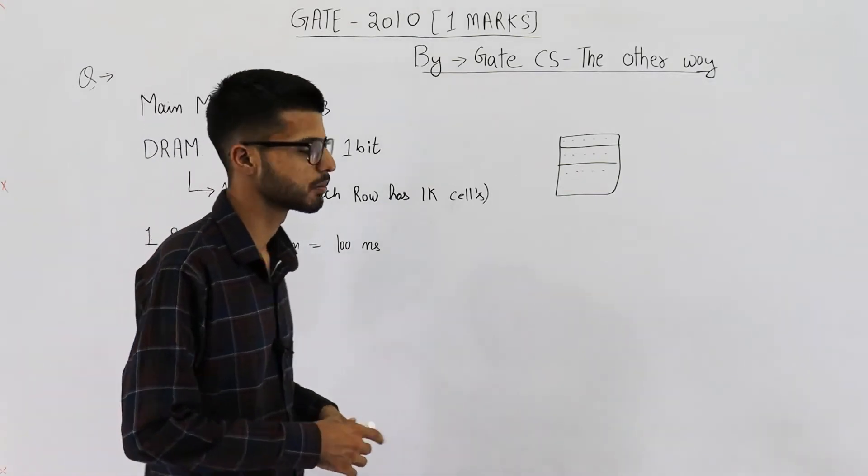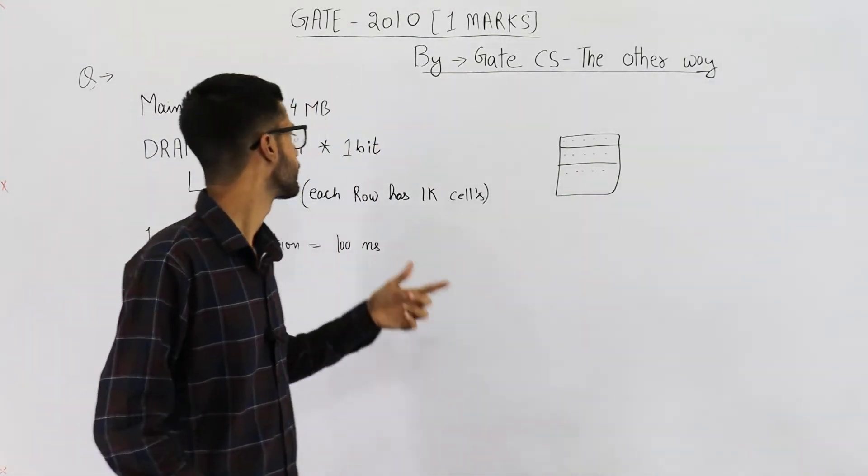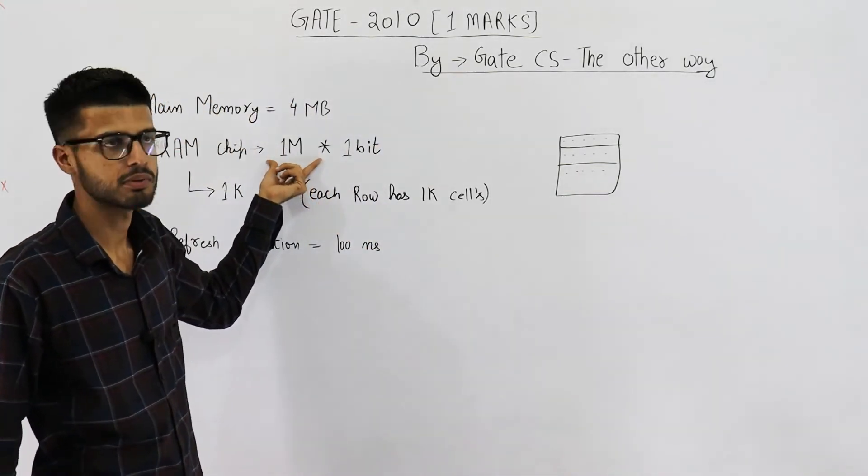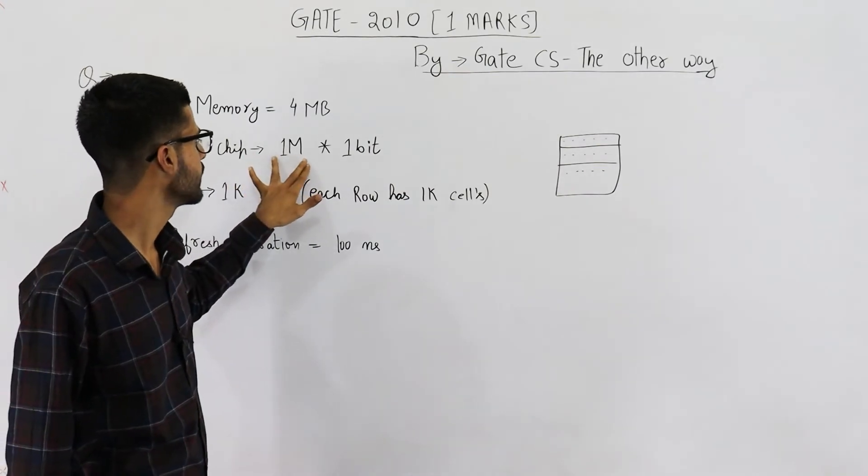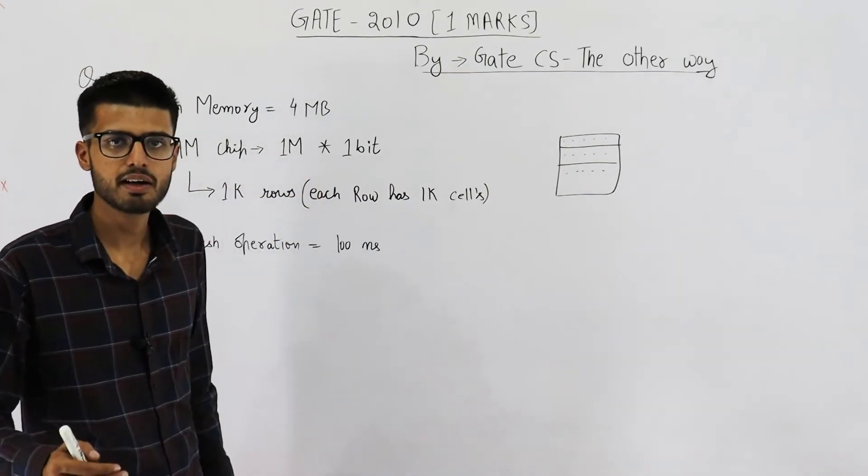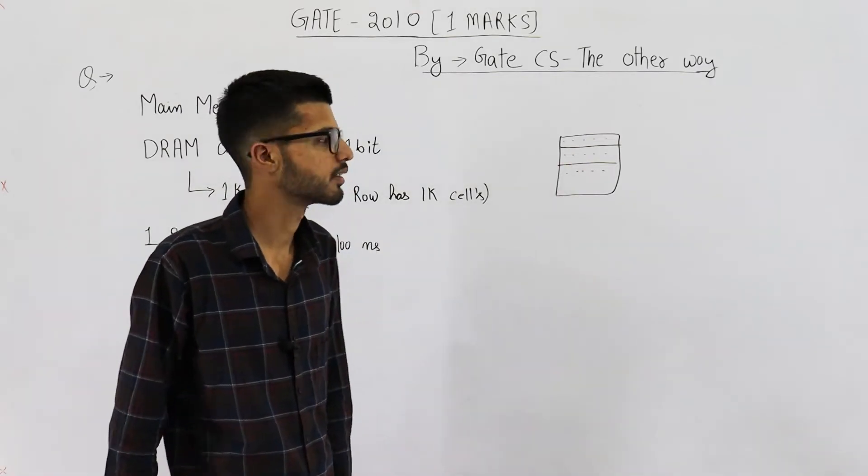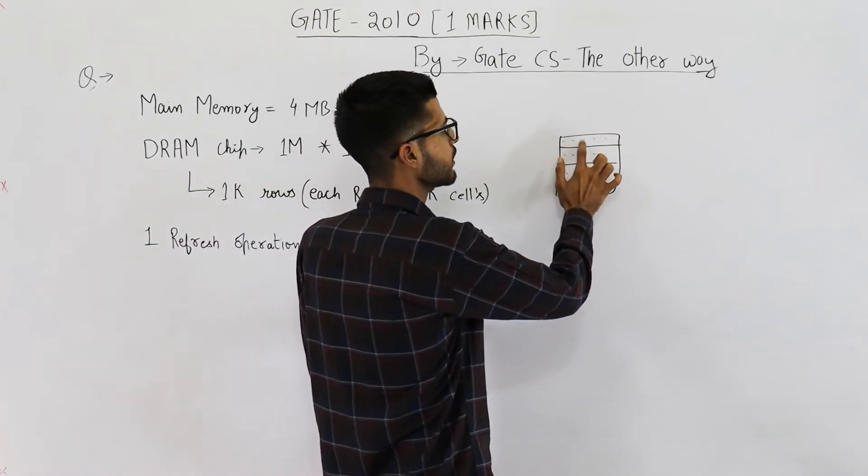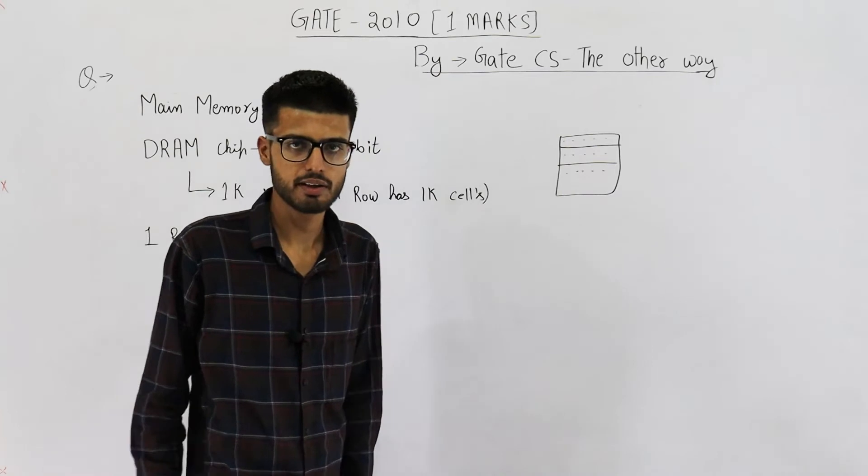So, how many total cells will be there? 1K into 1K? That's this 1M. That means, 1M cells are divided into 1K rows where each row has 1K cells. So, there are 1K locations per row in a DRAM chip.